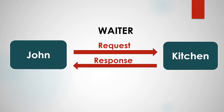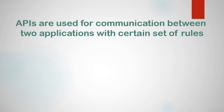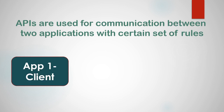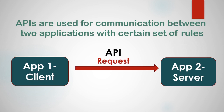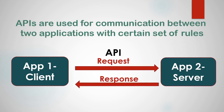The API works in exactly the same way. APIs are used for communication between two applications with a certain set of rules. Consider application one called client and application two called server. The client and server communicate with the help of an API, which takes the request from the client to the server, and once the request is processed, returns the response from server to client.